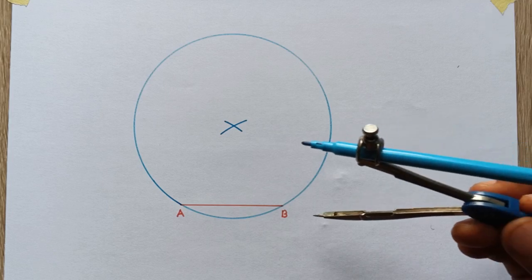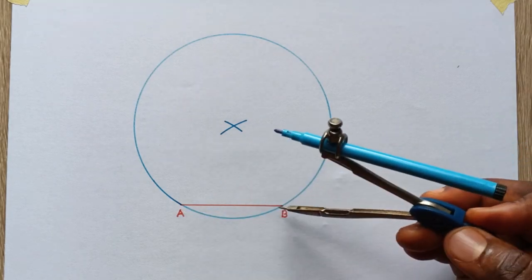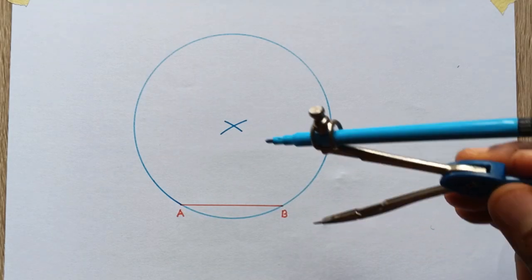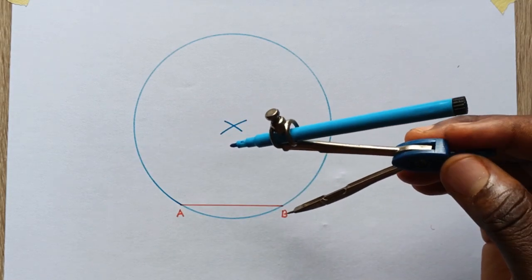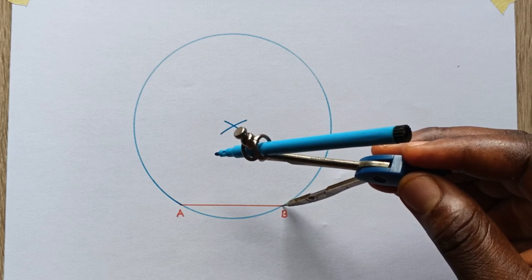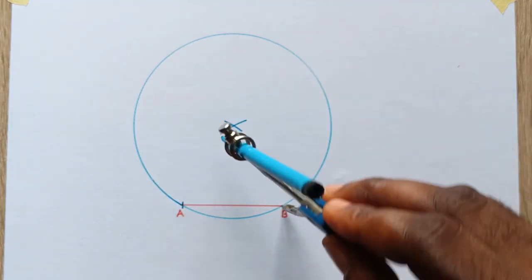Now the circle we cut across both line A and B. What you need to do right now, since this line AB is the given dimension of your hexagon, you now stand at this point and you cut the first arc.